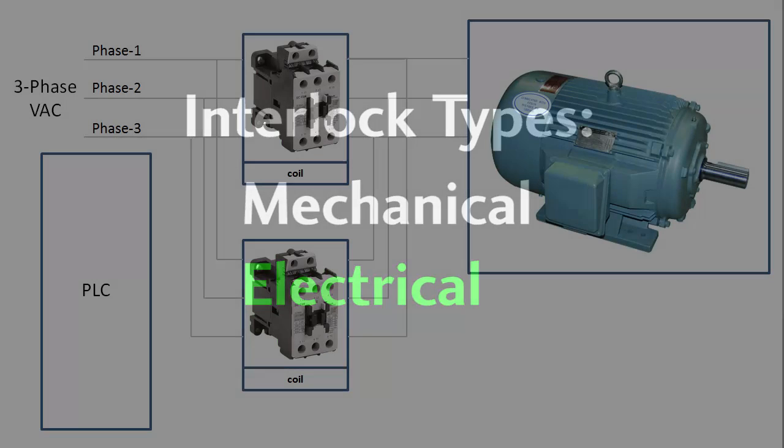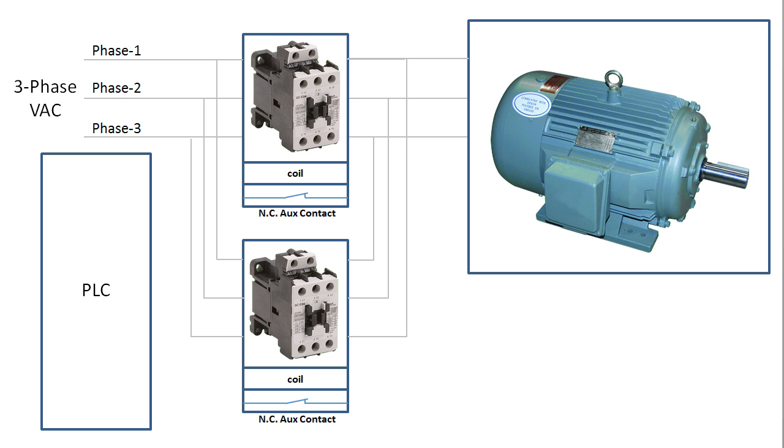The other way to interlock contactors is with an electronic interlock. You add a normally closed AUX contact to each contactor and wire them like this. So if this contactor is active and this AUX contact opens, there is no way that coil power can get to the other contactor. Likewise, if this guy is active, coil power can't get to this contactor.